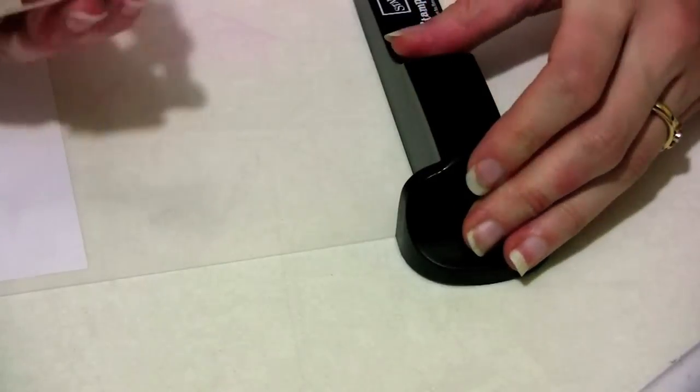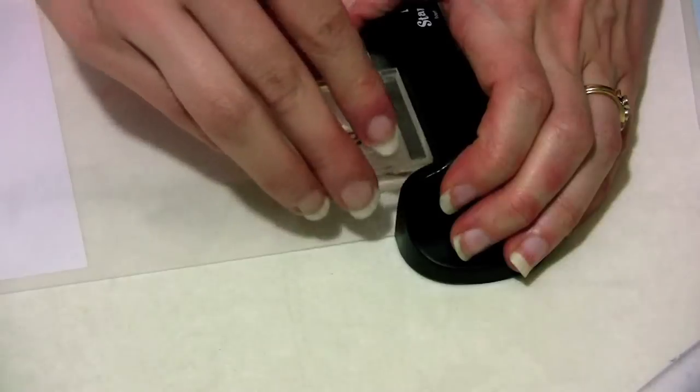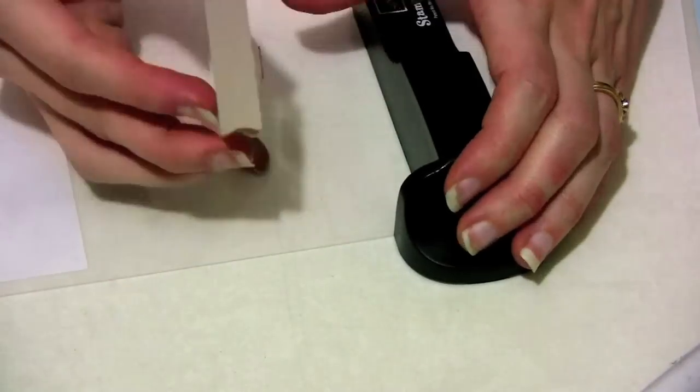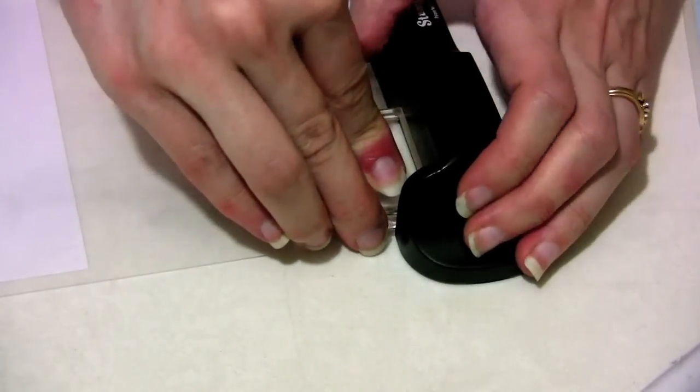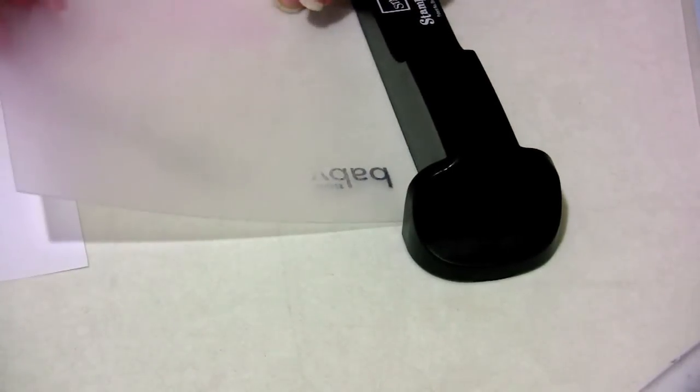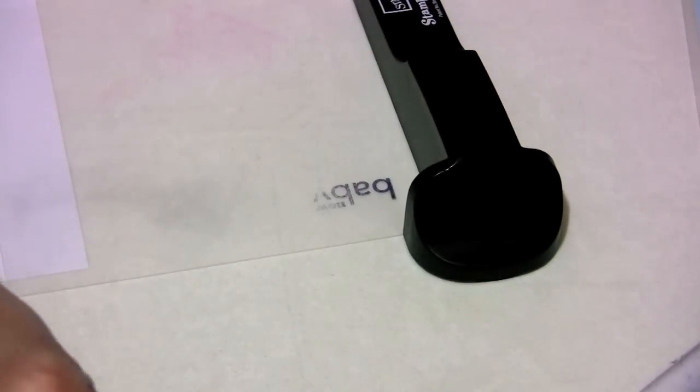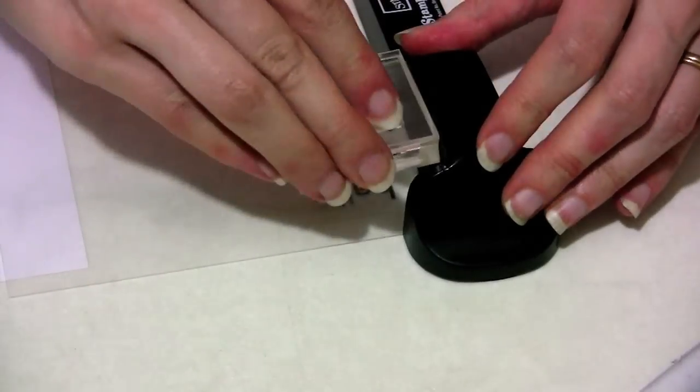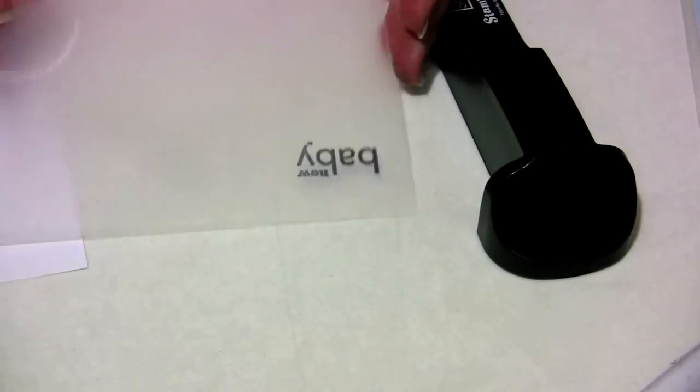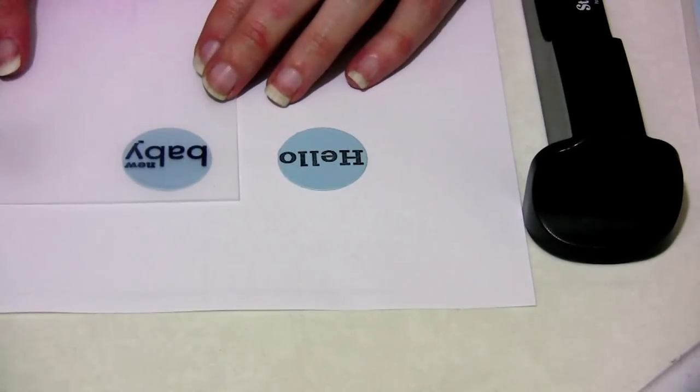I'm going to use my Stamp-a-ma-jig here and I really enjoy using my Stamp-a-ma-jig whenever you're stamping into small items like these little circles. You put the plasma into the corner of the Stamp-a-ma-jig and then quite simply line up the corner of your acrylic block and stamp it onto the plasma like this. Then what you can do is take the plasma, line it up onto your image where you want it to be exactly.